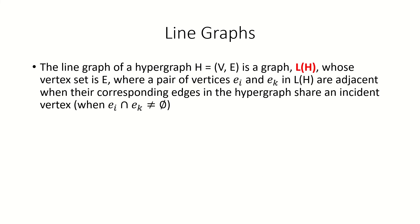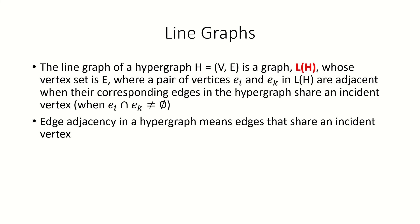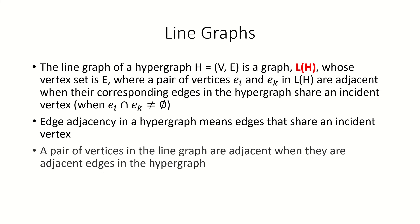Now let's move on to our next type of ordinary graph that we can construct from a hypergraph: line graphs. The line graph of a hypergraph is an ordinary graph whose vertex set consists of the edges of the hypergraph, where two vertices are adjacent if their corresponding edges in the hypergraph have a non-empty intersection — that is, they have a vertex in common. Using edge adjacency, we can also describe the line graph as a graph in which two vertices are adjacent if their corresponding edges in the hypergraph are adjacent.